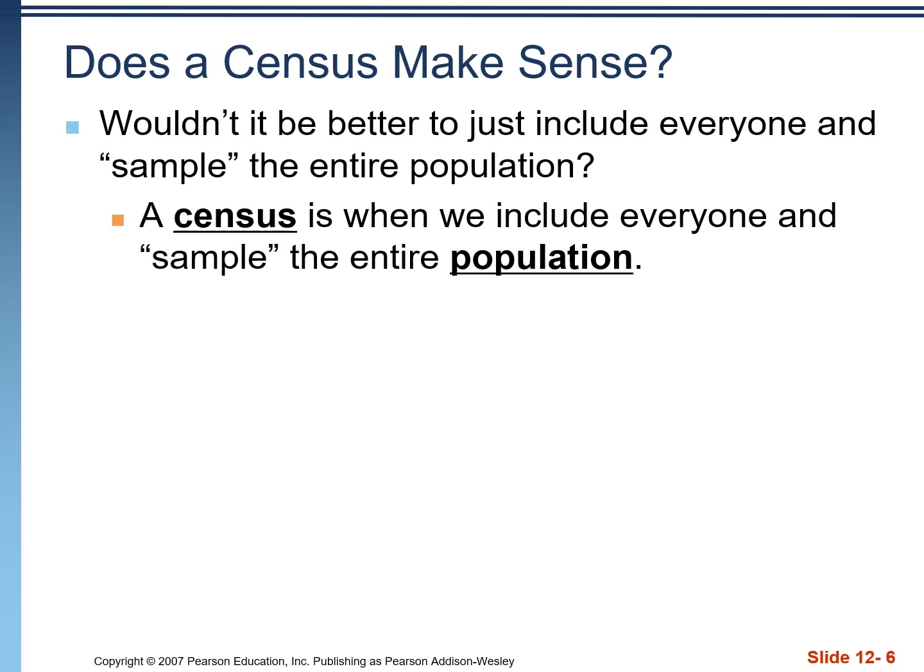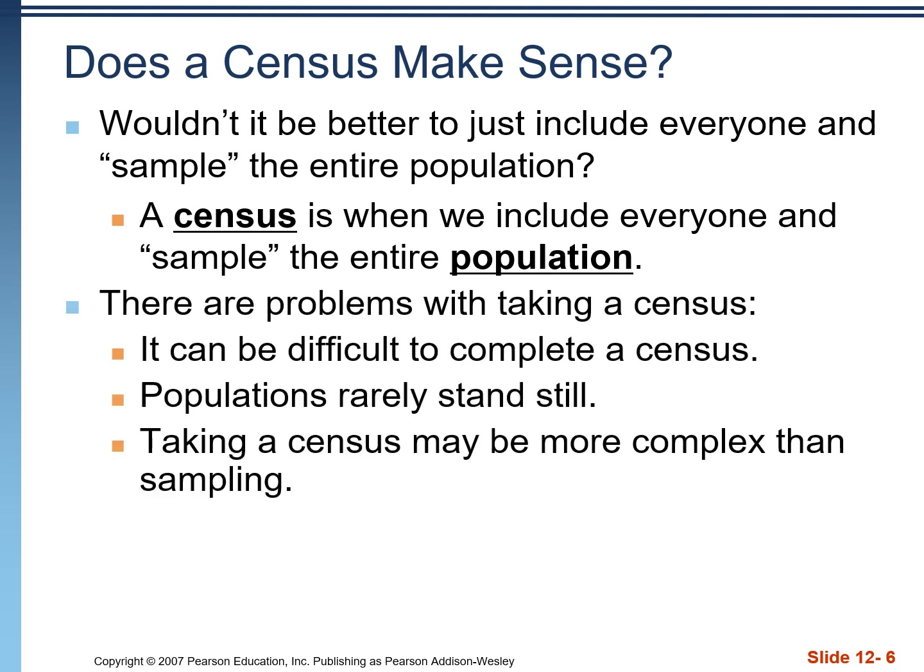A common question is: why not just sample everyone? In some cases that's possible — for example, surveying all students at a high school. When we sample the entire population, that's called a census. The United States government tries to do this every 10 years. Every household gets mailed a census form, census workers visit households that don't return their form, and workers also go out to find homeless people to document how many are living in the country.